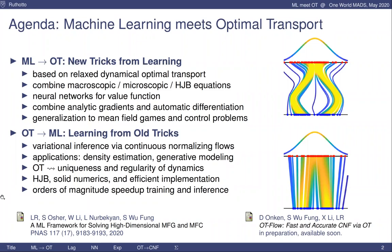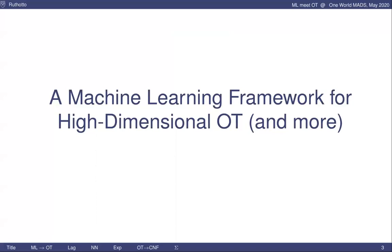This framework also extends beyond OT to mean field games and mean control problems. That part is based on an article written with Stan Osher and his group during my time at IPAM last semester. In the second part, I'll motivate why we care about high-dimensional OT problems — typically we solve OT in two or three dimensions, but high-dimensional problems arise quite a lot in machine learning. So let's apply OT to variational inference via continuous normalizing flows. Bringing in optimal transport knowledge really simplifies and regularizes the problem and, with the right numerics, gives quite drastic speed-ups both in training and inference time.